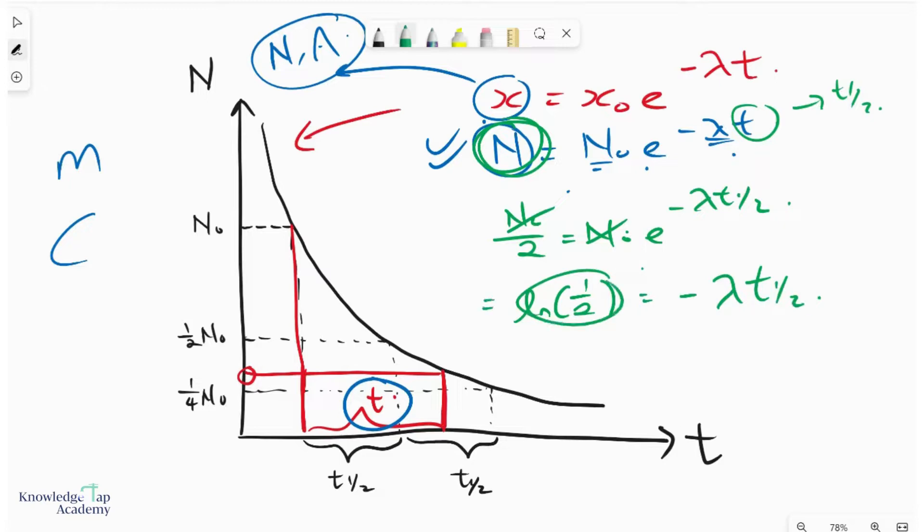ln(½), of course, is simply equal to minus ln 2. And so we can say that the half-life is simply ln 2 over the decay constant lambda.